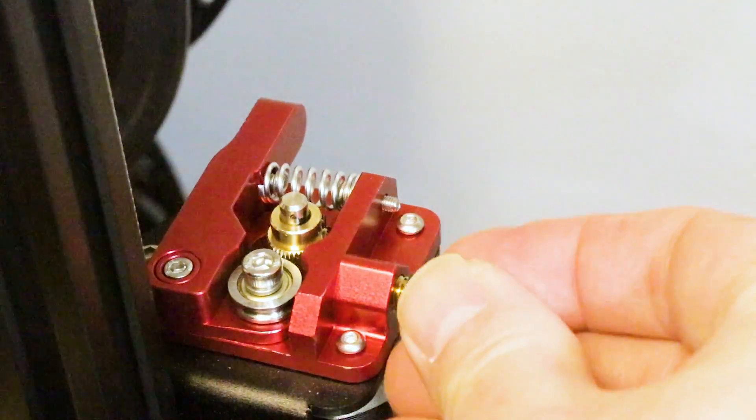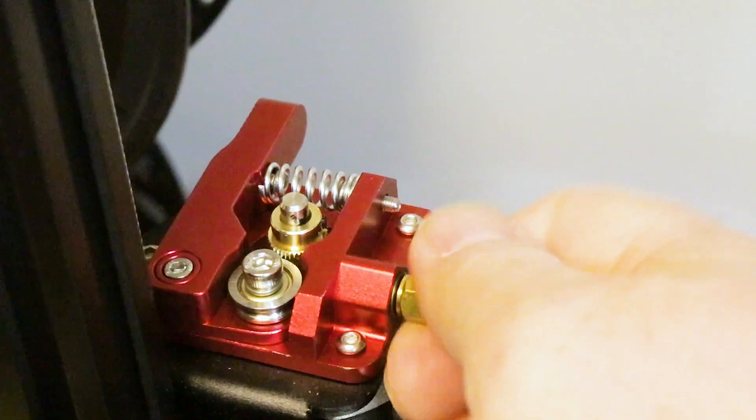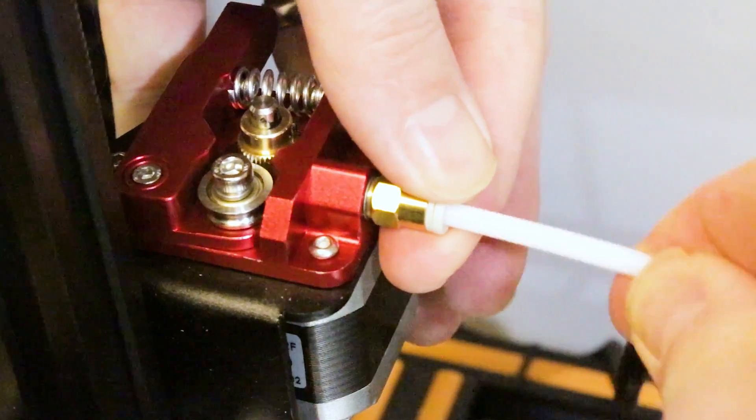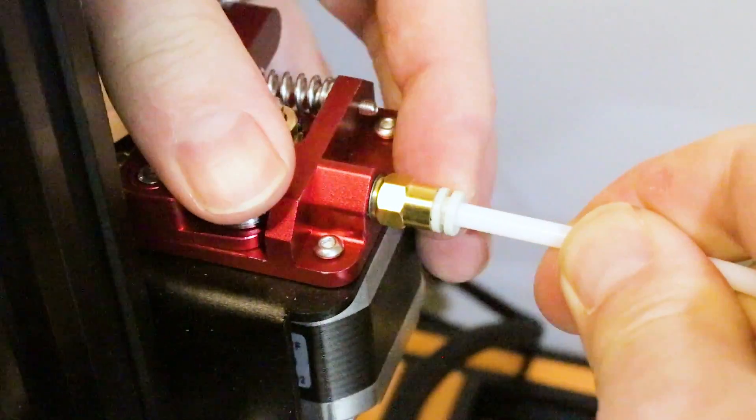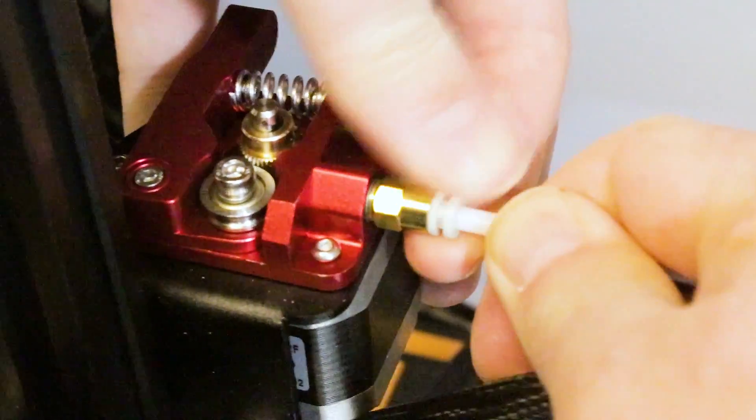Now we can install the coupling for our PTFE tube and cinch it down with a wrench. Slide your tube into place and give it a few tugs to make sure it's seated. Make sure it's all the way inserted and the collet is extended so it can't come back out.